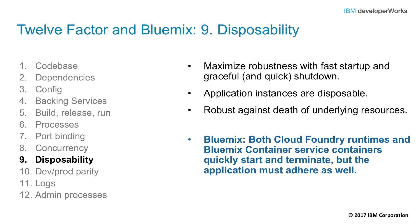Factor number nine: disposability. This factor is about maximizing robustness with fast startup and graceful shutdown. Processes should start almost instantaneously, and when you shut them down, there should be no housekeeping or extra work to do — you just go away. For a web process receiving a SIGTERM, it should stop listening on the service port and handle any outstanding requests before exiting. A worker process can take any incomplete work and return it to the queue. Cloud Foundry can deploy and scale quickly — but can your app?